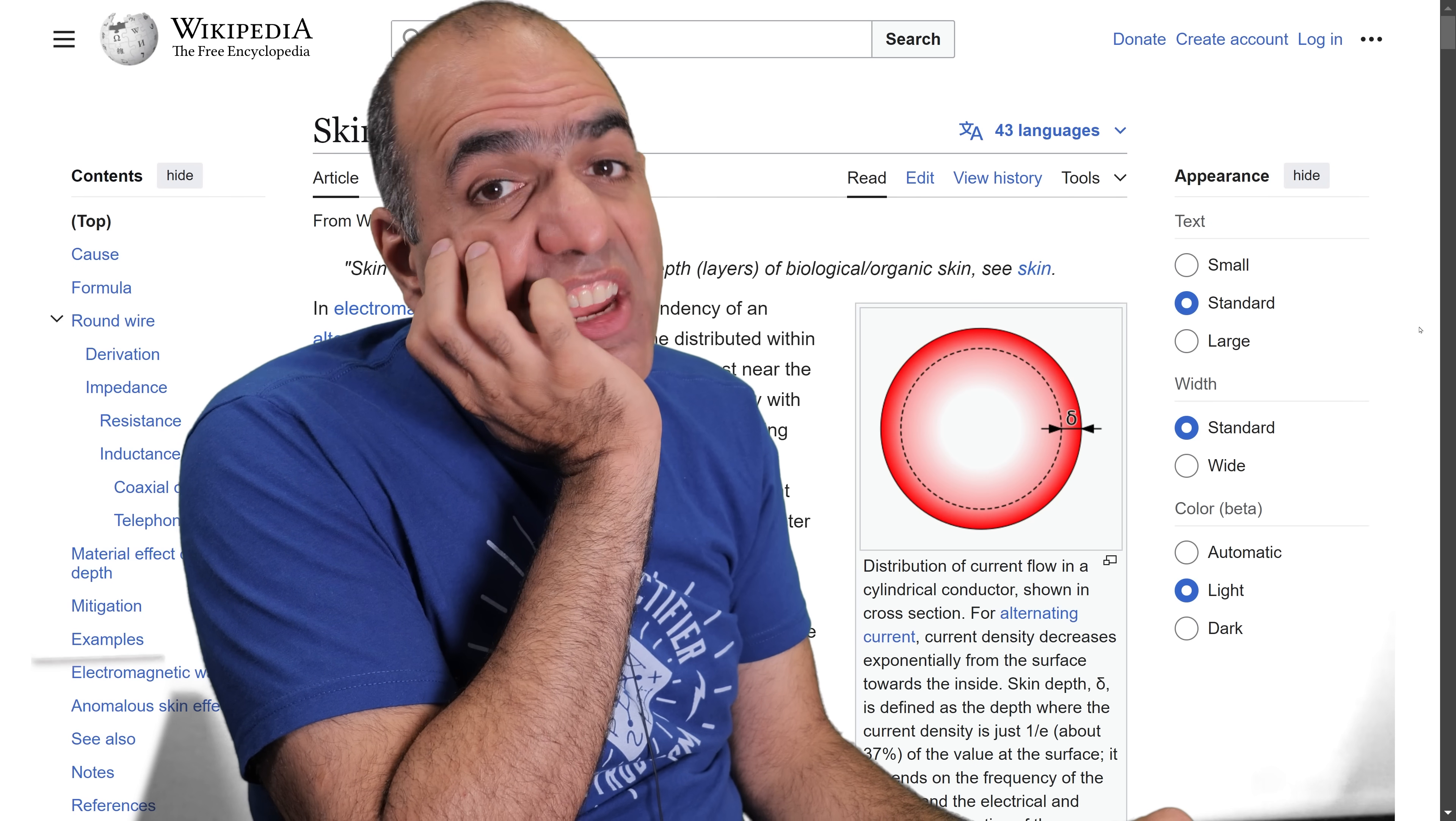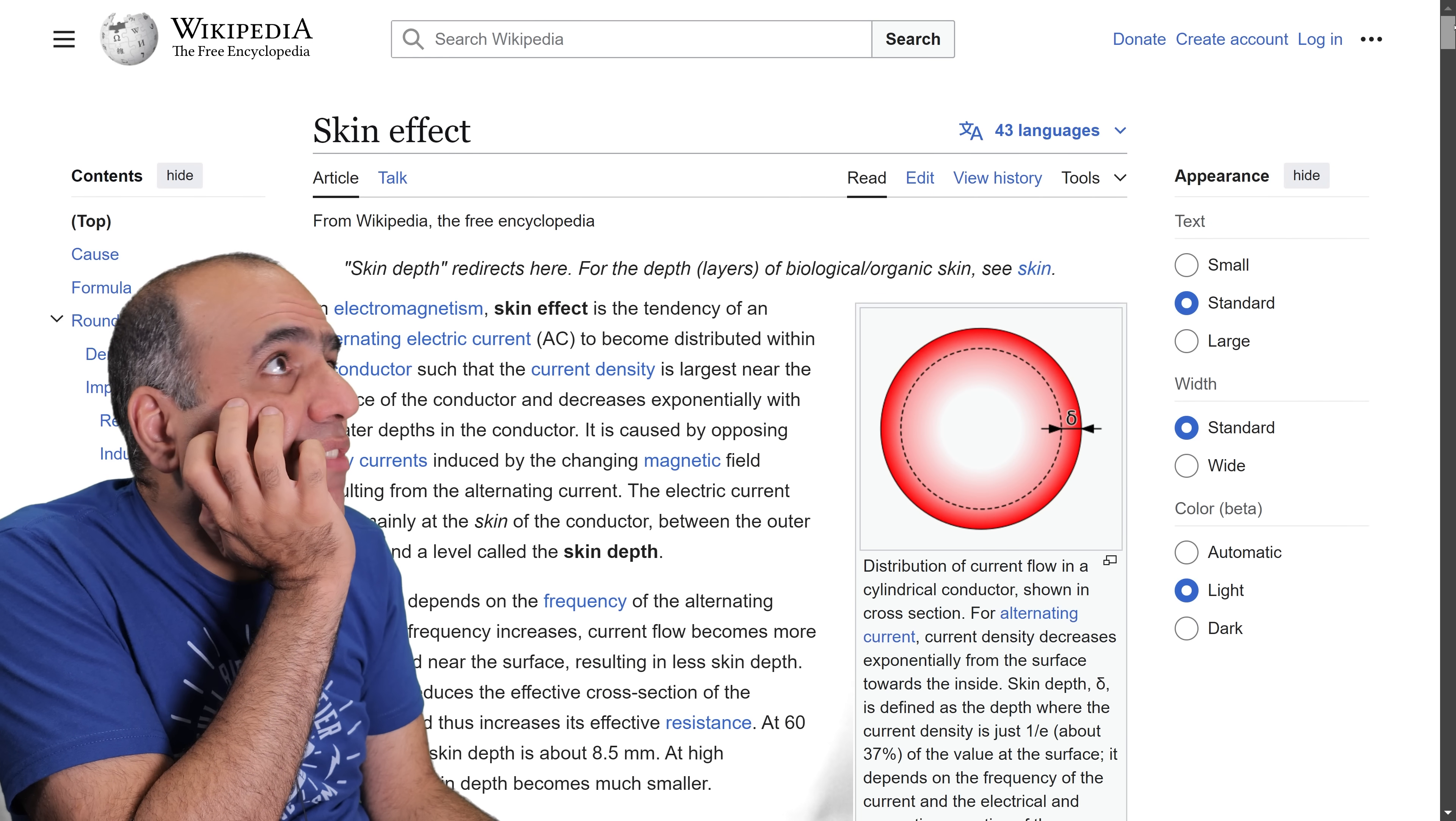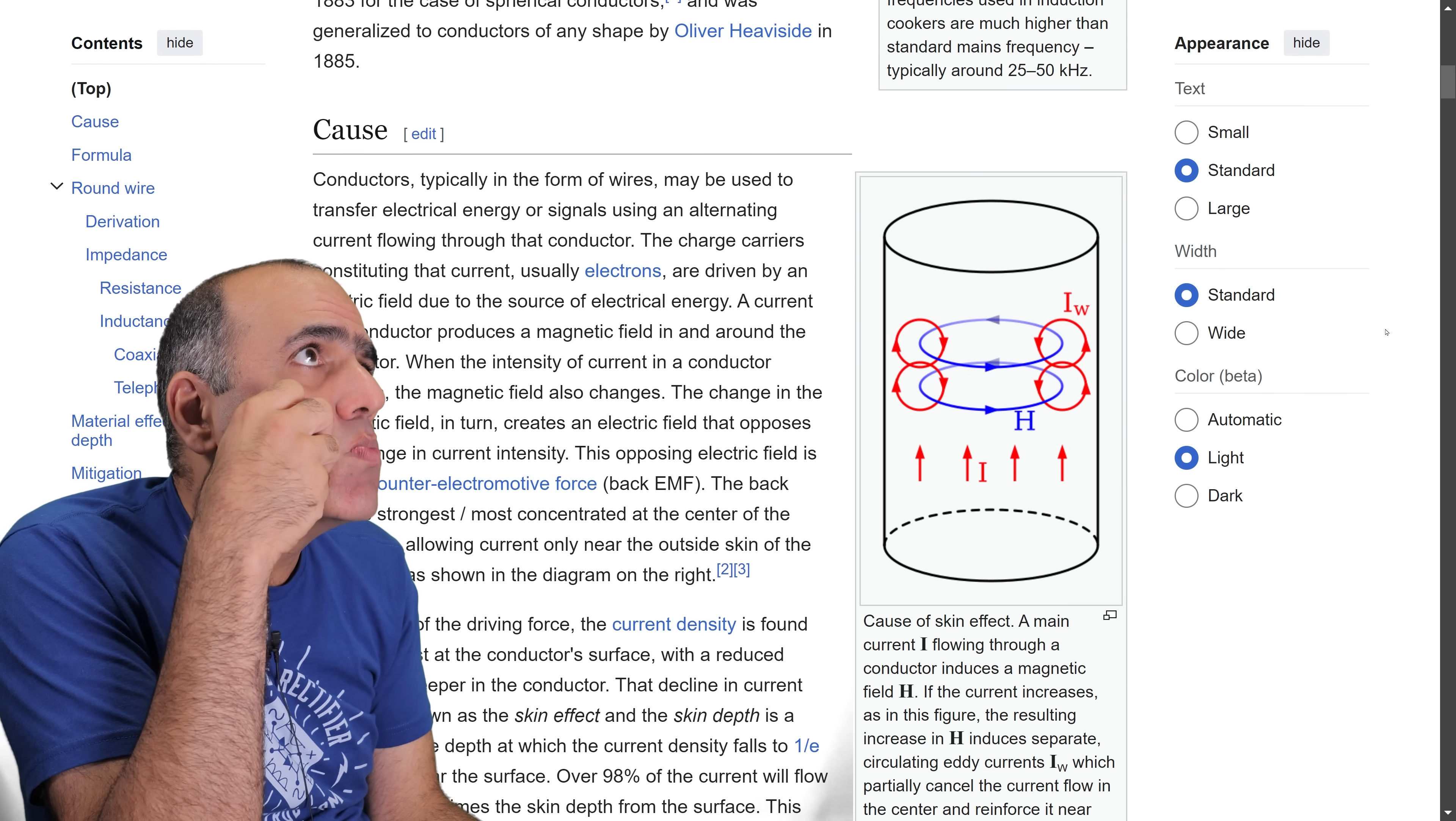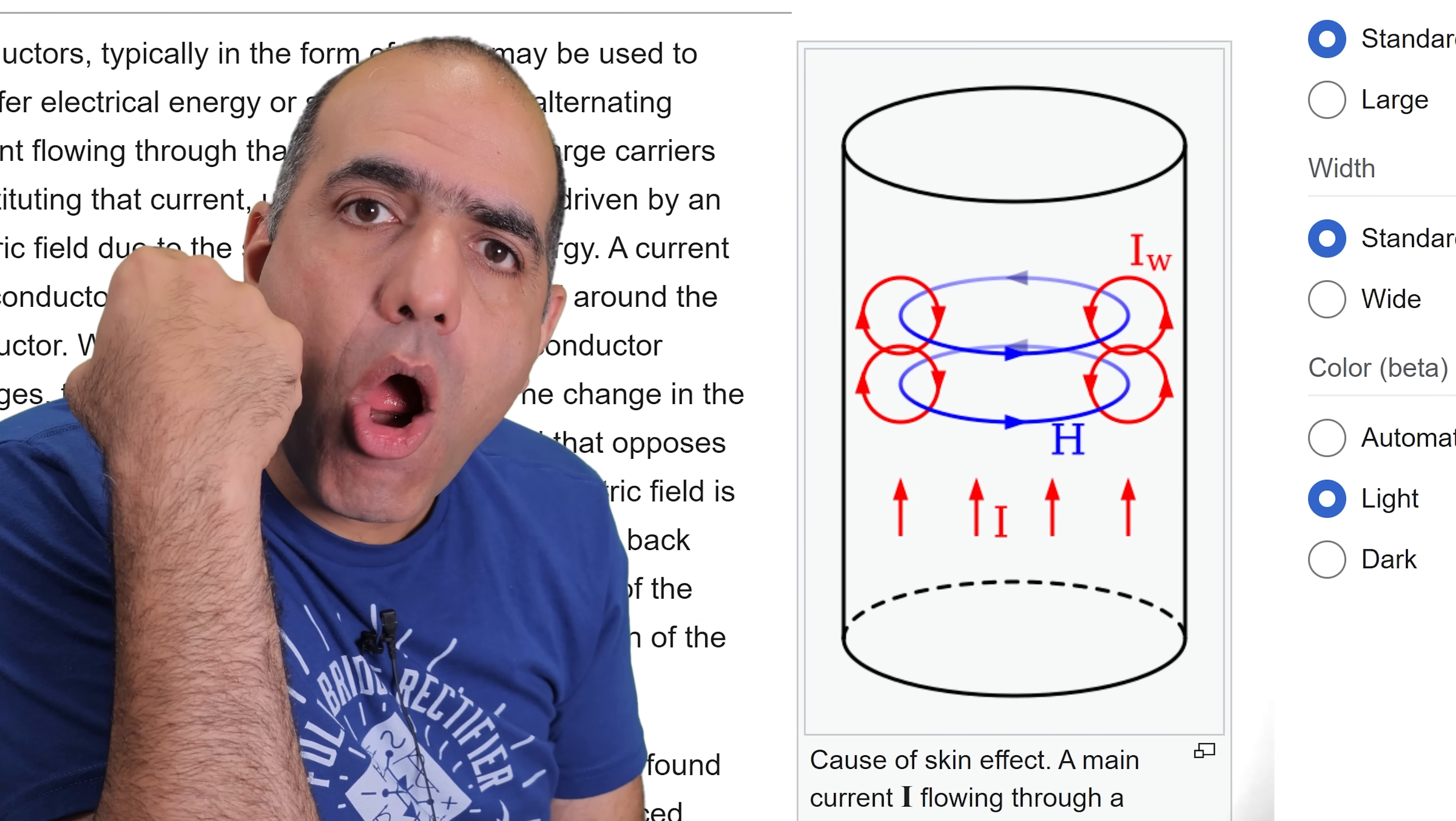And so we read Wikipedia. The magnetic fields generate eddy currents that oppose the flow in the middle. Oh. Oh. Hi, I'm an expert in skin effect now.